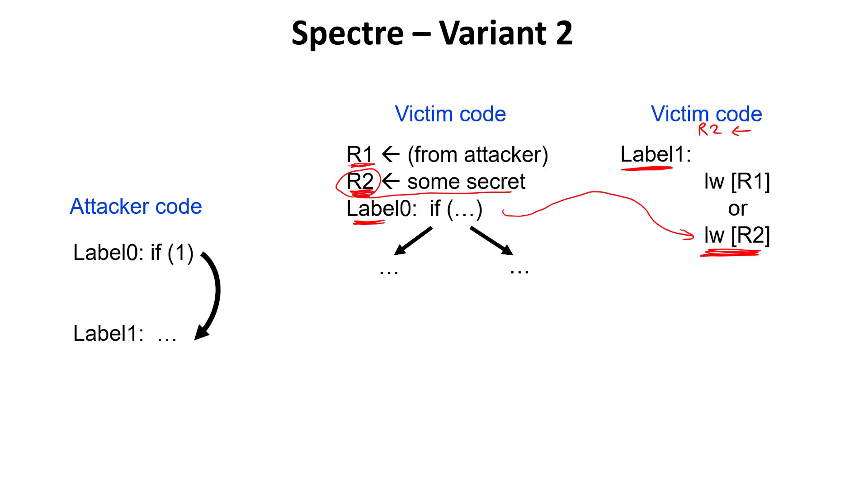How exactly does the attacker force the victim to get to this point in the code and then jump to this location over here? It does it by first running the attacker and running this code in the attacker where there's an if statement at label 0, and this branch is always taken, and it jumps to label 1. If you keep running this code in the attacker, the branch predictor gets warmed up, and so there's an entry over here which says that when you encounter label 0, the branch should be taken, and it should jump to label 1.